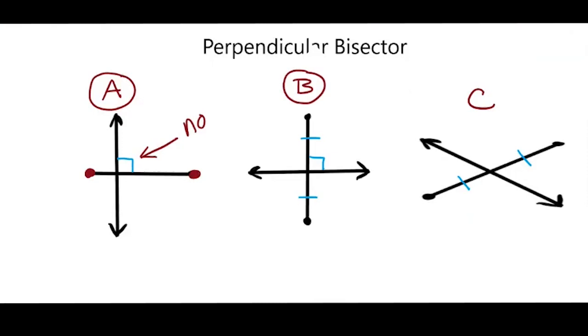For B, I have my right angle, and it also tells me that there are two congruent line segments. So that would mean that yes, this is a perpendicular bisector.